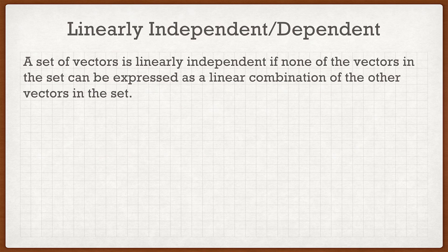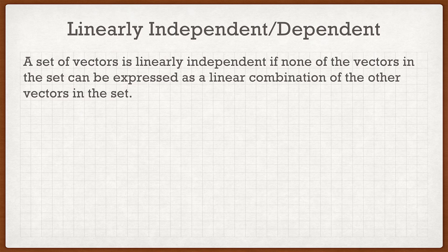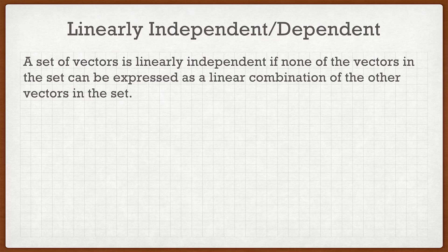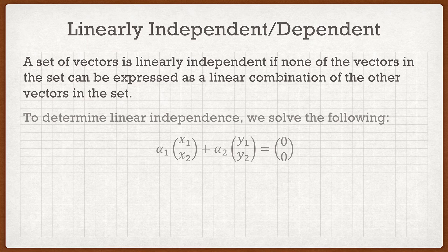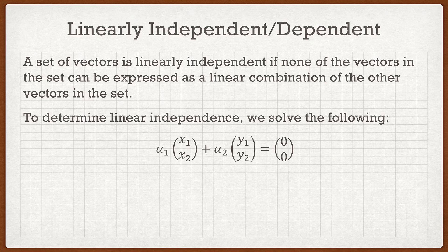So to start off, we're going to tackle parts A and C at the same time, which have to do with linearly independent or linearly dependent. The definition says a set of vectors is linearly independent if none of the vectors can be expressed as a linear combination of the other vectors in the set. In engineering terms, to determine linear independence we solve the following equation: alpha 1 times x plus alpha 2 times y equals 0.